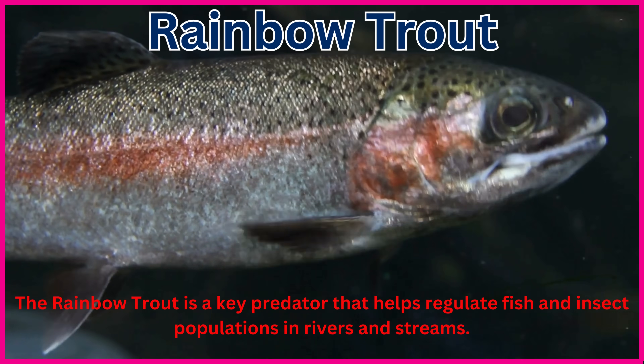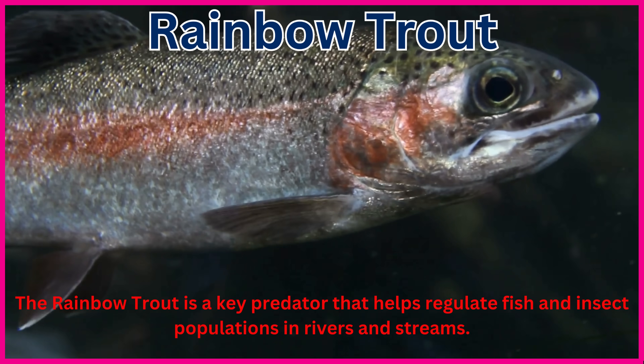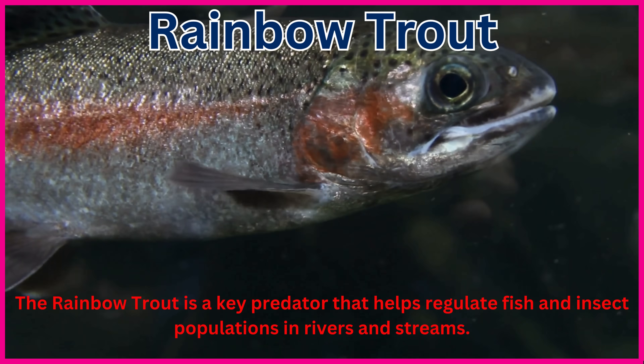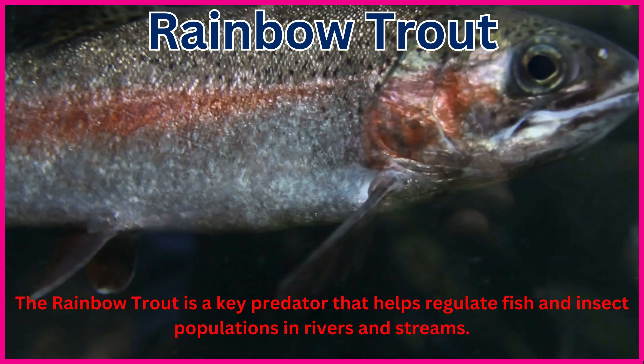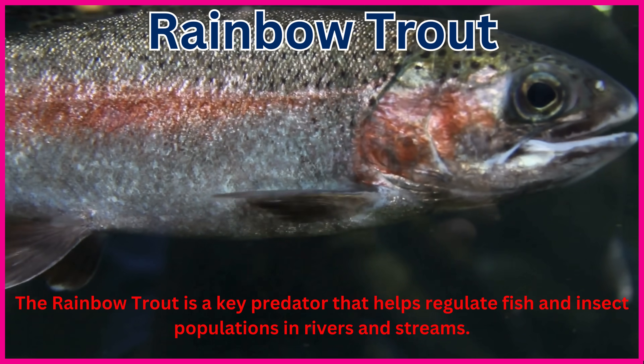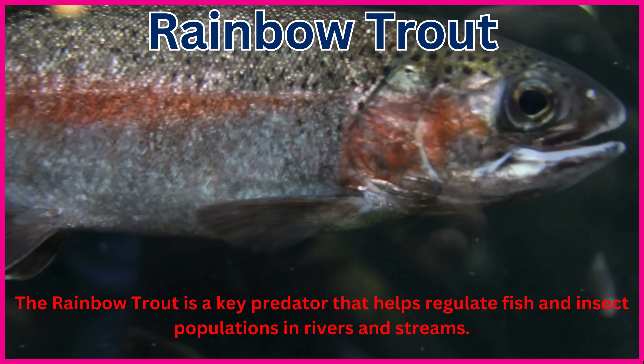Rainbow Trout. The rainbow trout is a key predator that helps regulate fish and insect populations in rivers and streams.